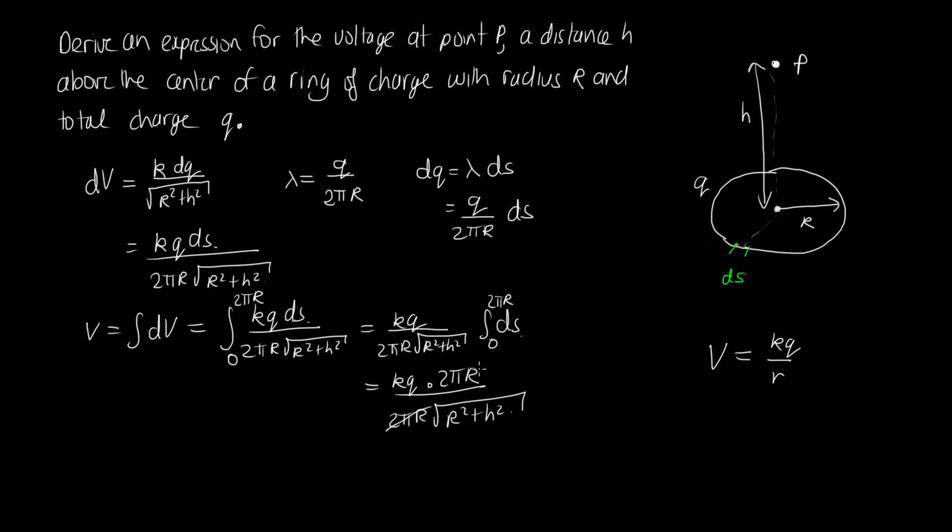So these will cancel out. And this will be equal to kq over the square root of R² + h². So that is our expression for the voltage at point P.